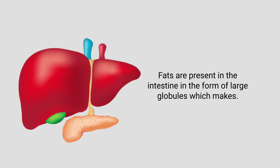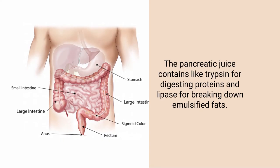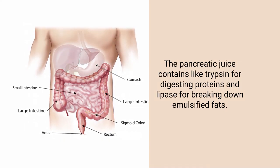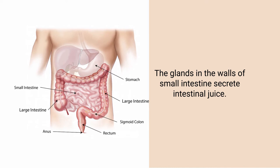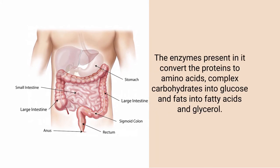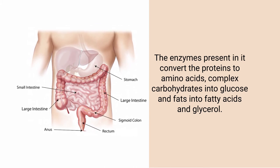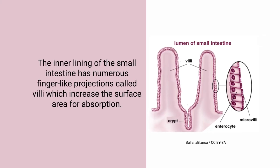The fat present in the intestine in large globules is broken down by pancreatic juice, which contains trypsin-like enzymes that digest protein and lipase for breaking down emulsified fats. The small intestine walls have glands that secrete intestinal juice — the enzymes convert proteins into amino acids, complex carbohydrates into glucose, and fats into fatty acids and glycerols. These products — amino acids, glucose, and glycerols — are absorbed by the intestine and reach the blood, then the whole body.